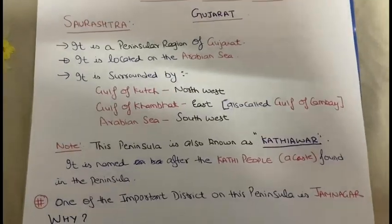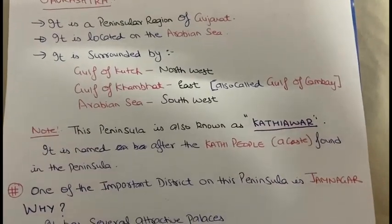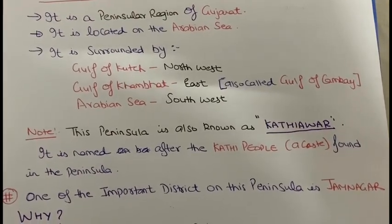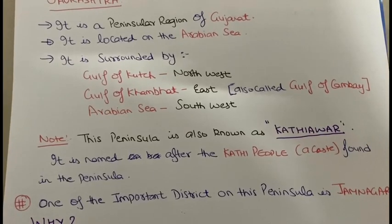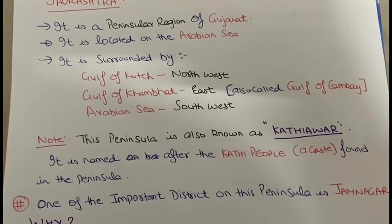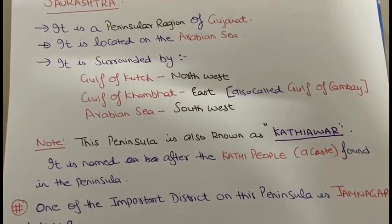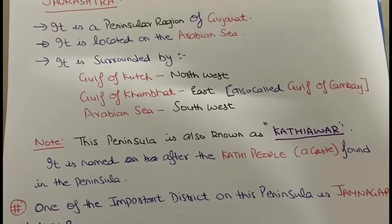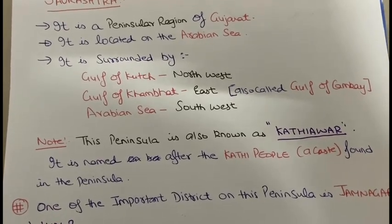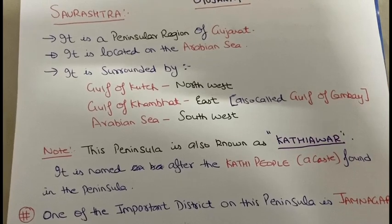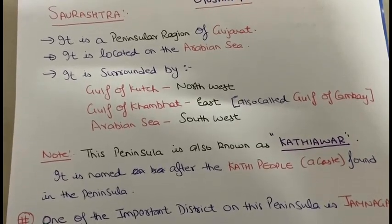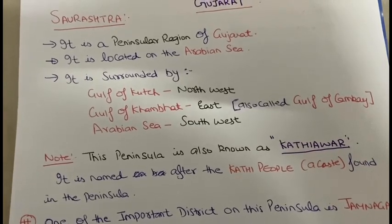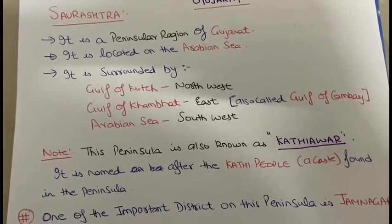One important thing is that this peninsula is also called Kathiawar. Saurashtra is also known as Kathiawar. Why is it known as Kathiawar? It means that a caste known as Kathi people used to reside over this peninsula, and on the basis of that, this place is called Kathiawar. So you should know that Saurashtra and Kathiawar are interchangeable names.